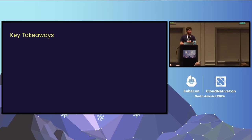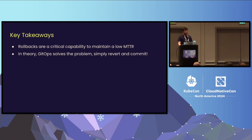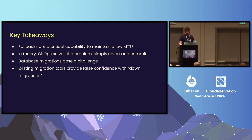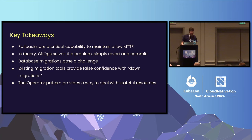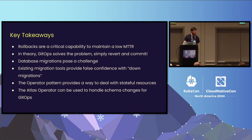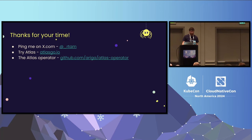Key takeaways: rollbacks are a critical capability to maintain a low MTTR. In theory, GitOps solves this — simply revert and commit. Database migrations pose a unique challenge, similar to other stateful resources, to the GitOps philosophy. Existing migration tools give us false confidence that we have a rollback path, but in practice things are not so bright. The operator pattern provides a way to deal with stateful resources, and the Atlas Operator can handle schema changes for GitOps workflows. Thank you — you can find me on X, and I invite you to try Atlas.